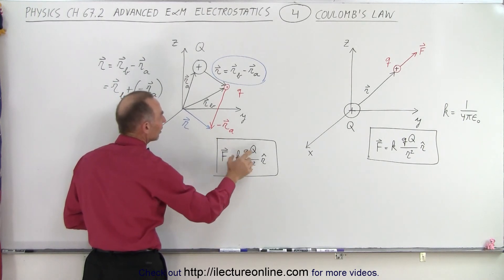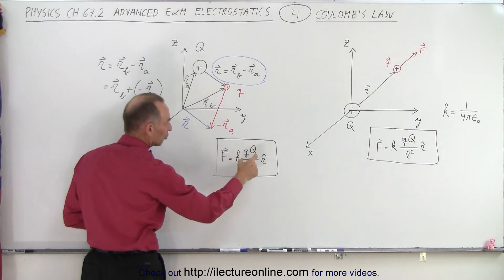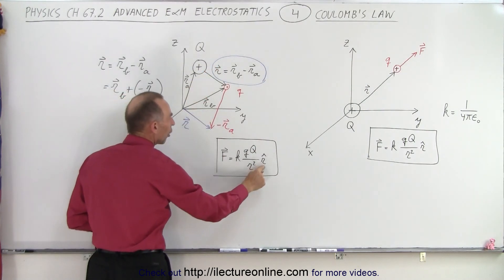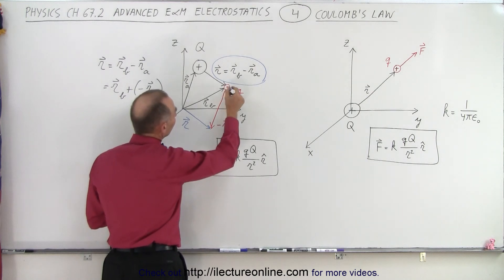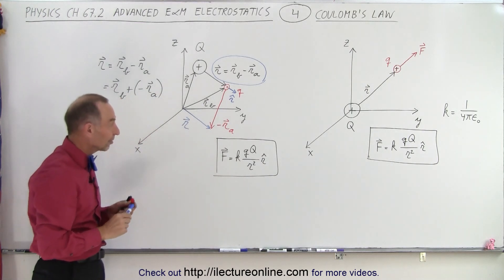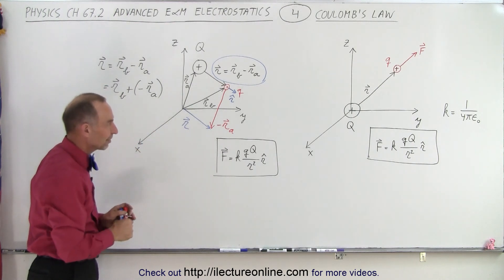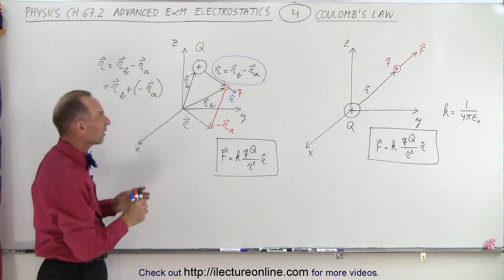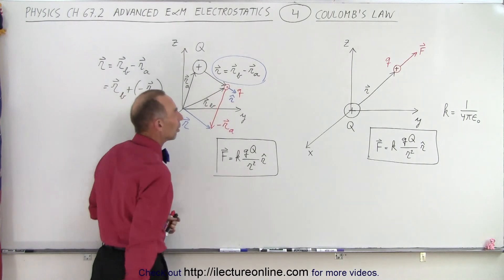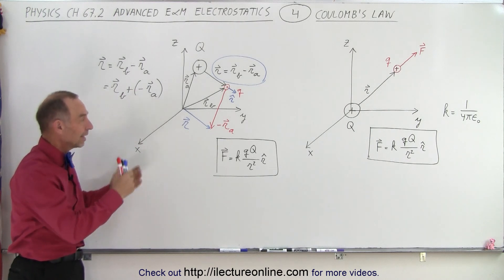To define the Coulomb force at the test charge, it's equal to K times the product of the two charges divided by R squared — R being the length of this vector squared — times the R unit vector. The R unit vector is simply a unit vector in the direction of the vector R. It's all about notation and feeling comfortable with this kind of notation, because now you understand why the R vector is equal to the difference between R sub B and R sub A. That is how it's done when we're dealing with Coulomb forces and Coulomb's law in three-dimensional space.